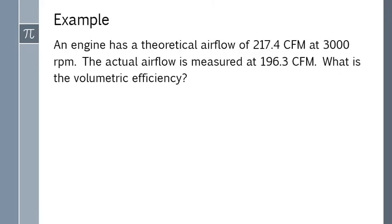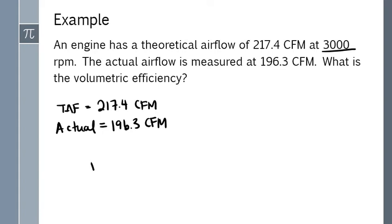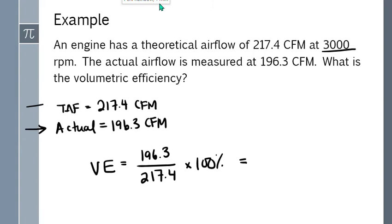So let's figure these out. An engine has a theoretical airflow of 217.4 CFM at 3000 RPM. The actual airflow is 196.3 CFM. There's an engine to be given, I don't need it for this formula. Volumetric efficiency is equal to the actual airflow divided by the theoretical airflow, multiplied by 100%. So the volumetric efficiency for this engine is going to be 90.3 when you do that math. And because we multiplied in that percent, we get a percent out.